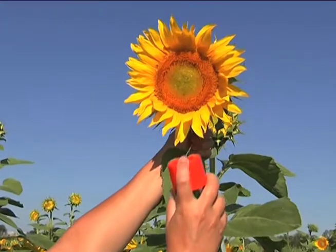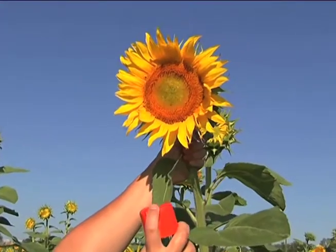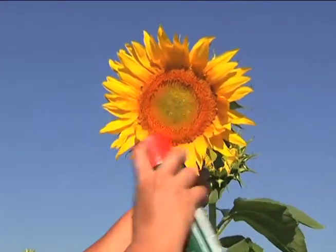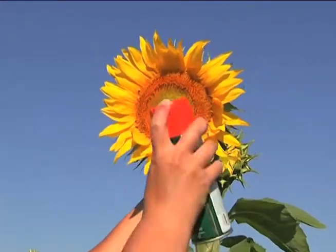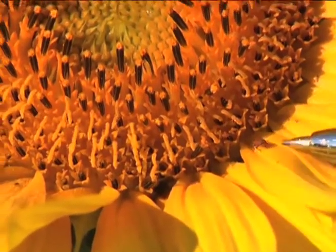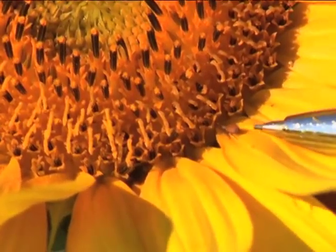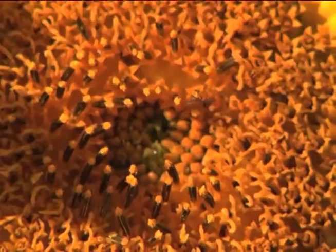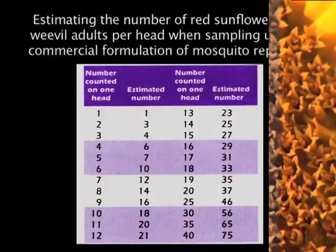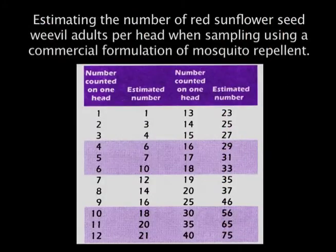You can use mosquito repellent to spray the head. This will force the weevils to move up from the back, and you can see there's one right there on the face of the head. Then use the table to estimate the total number of weevils per plant.